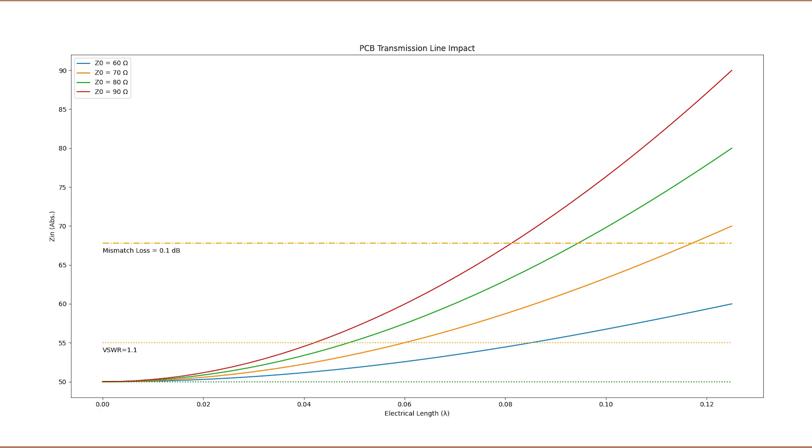Horizontal limit lines show where the resulting impedance surpasses a VSWR of 1.1, corresponding to a mismatch loss of 0.01 dB, and another line shows where the mismatch loss exceeds 0.1 dB.